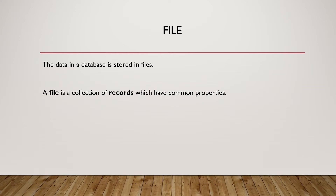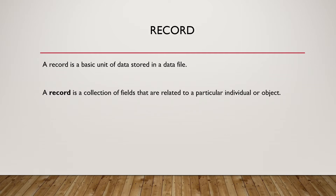In a database we need to know what is a file. The data in a database is stored in files. A file is a collection of records which have common properties. A record is a basic unit of data stored in a data file. A record is a collection of fields that are related to a particular individual or object.